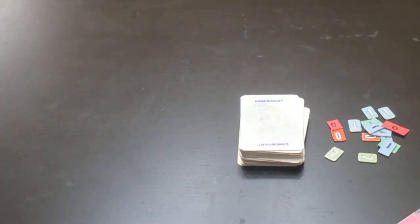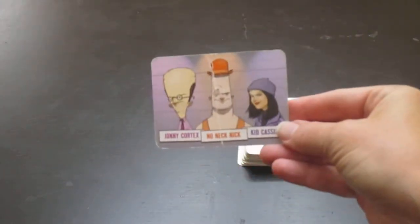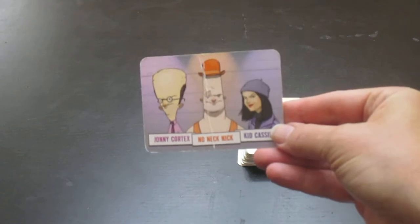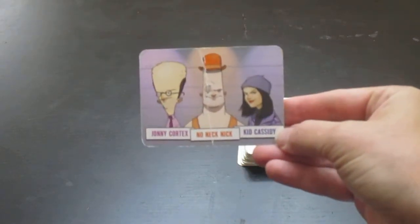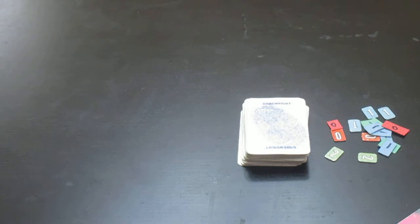The way the game is played is the first person who is the eyewitness draws a card from the stack and they look at their card. In this case it's Johnny Cortex, No Neck Nick, and Kid Cassidy. They take the card and they hide it and they don't let anybody else see it.